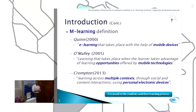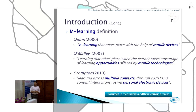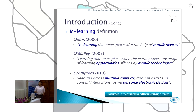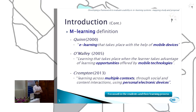The M-Learning definition has changed over the years. In 2005, it was defined as e-learning that takes place with the help of mobile devices. O'Malley defined it as learning that takes place when the learner takes advantage of learning opportunities offered by mobile technologies. And recently, in 2013, Crump Zone defined it as learning across multiple contexts through social and content interactions using personal electronic devices. This last definition is more focused on the students and their learning process.